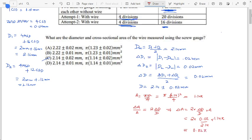So you can see that average area will be 1.14 plus or minus 0.02 pi. So option C is correct. Thank you and I'll see you next time.